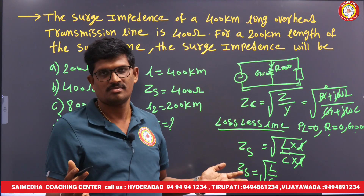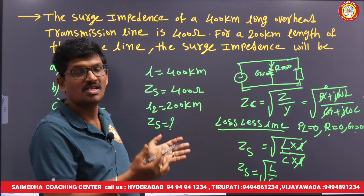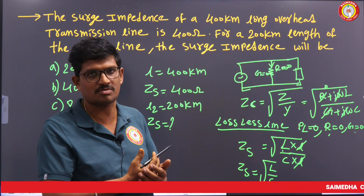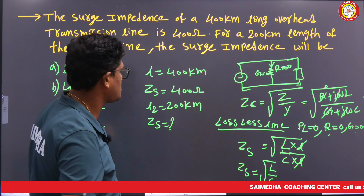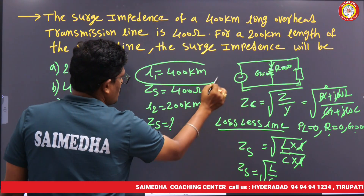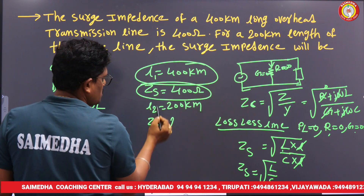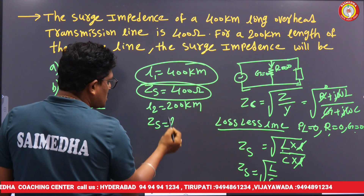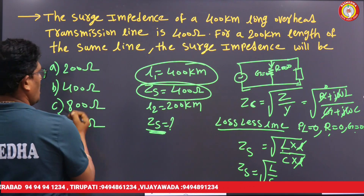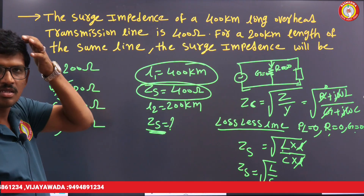So the answer: surge impedance is independent of the length of the transmission line. Hence, if for 400 kilometers the surge impedance is 40 ohms, and the length decreases to 200 kilometers, there is no change — the surge impedance is still 40 ohms.